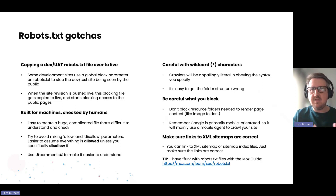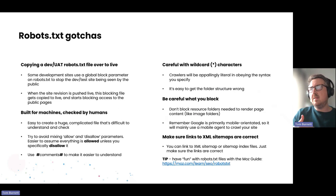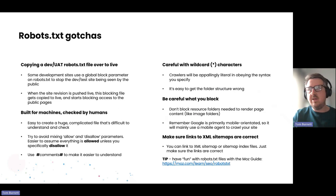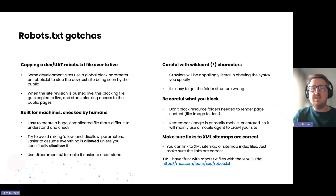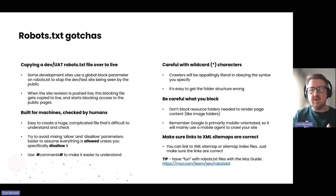Try to avoid mixing allow and disallow parameters. Assume everything is allowed unless you tell it not to be. You can add disallow lines for particular folders, or things like search results on your website — just any areas that you don't need Google to be crawling and indexing.